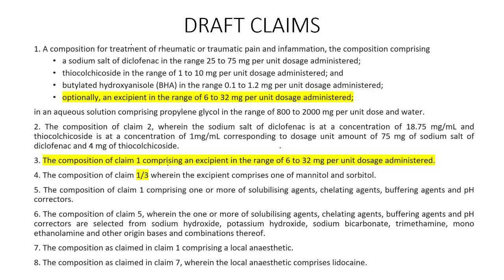I have drafted a few claims to answer the question. The question required only two claims but I have made eight claims to enable you to understand what type of claim structure you need. You could use one or more claims out of the given options or have your own different structure. The essential components of the composition are included only in the independent claim. The independent claim talks about a composition for treatment of rheumatic or traumatic pain and inflammation — this forms the preamble — and then we have the transitional linking element 'comprising,' followed by the essential elements derived from the question paper.